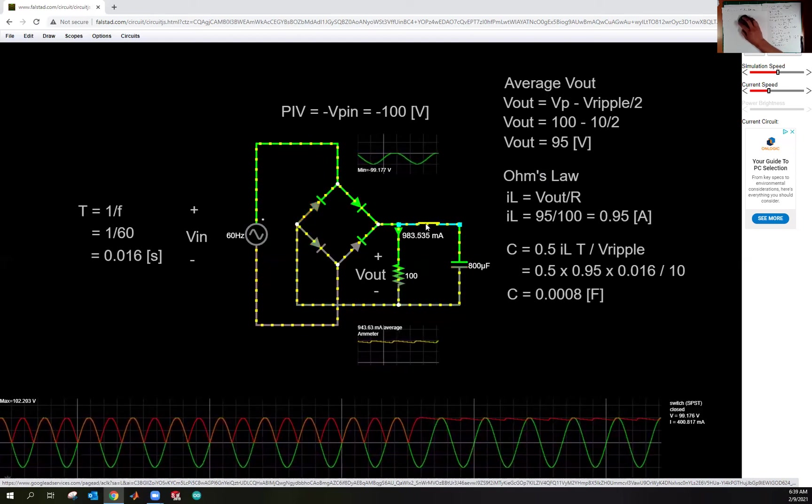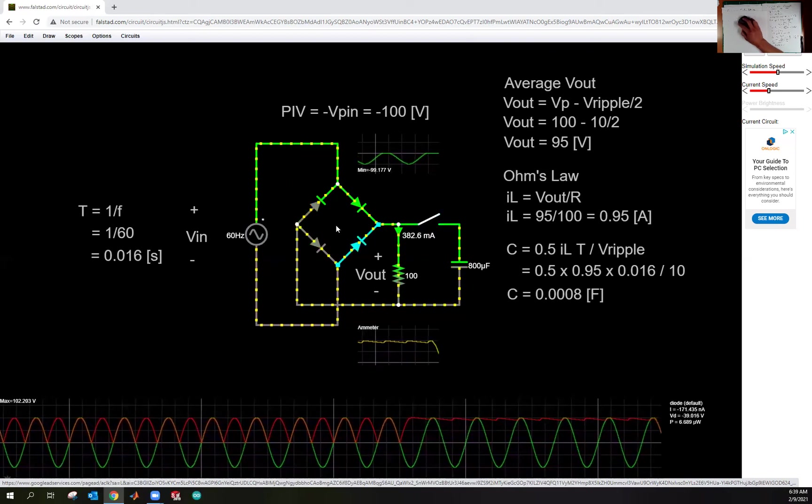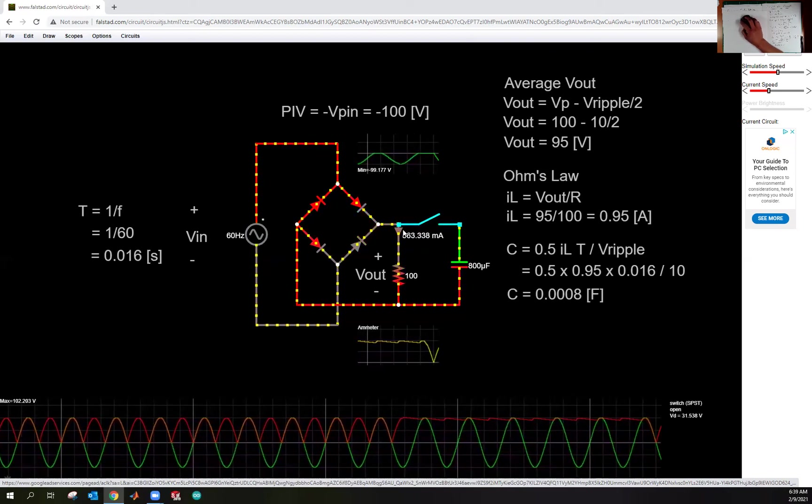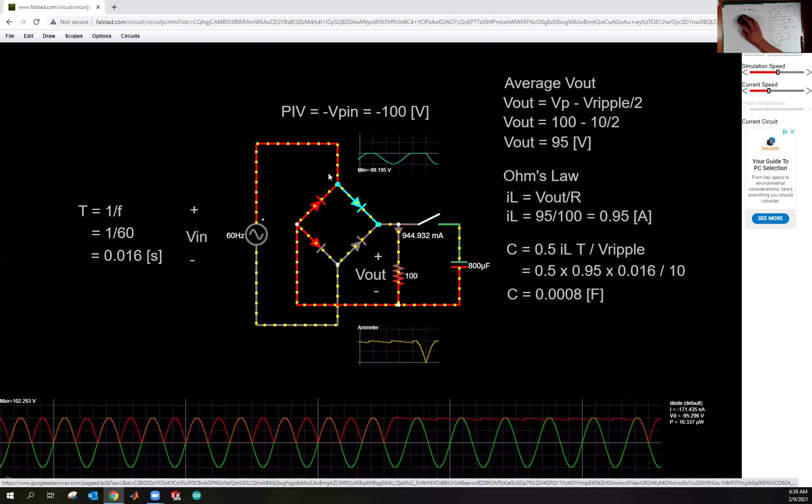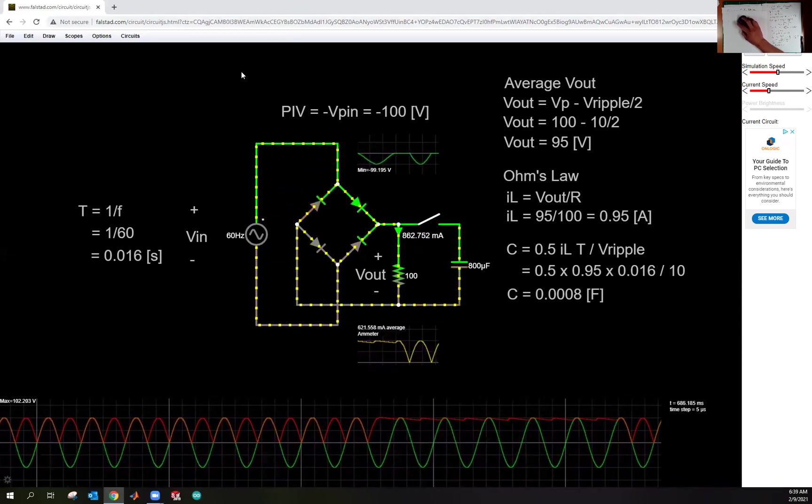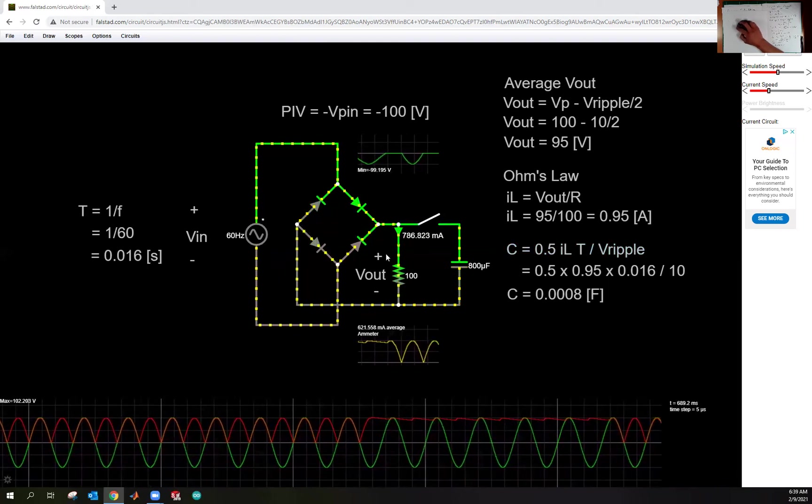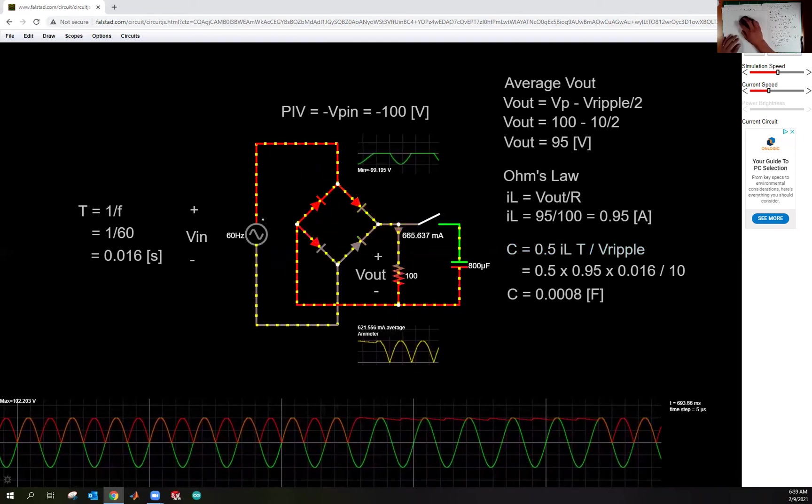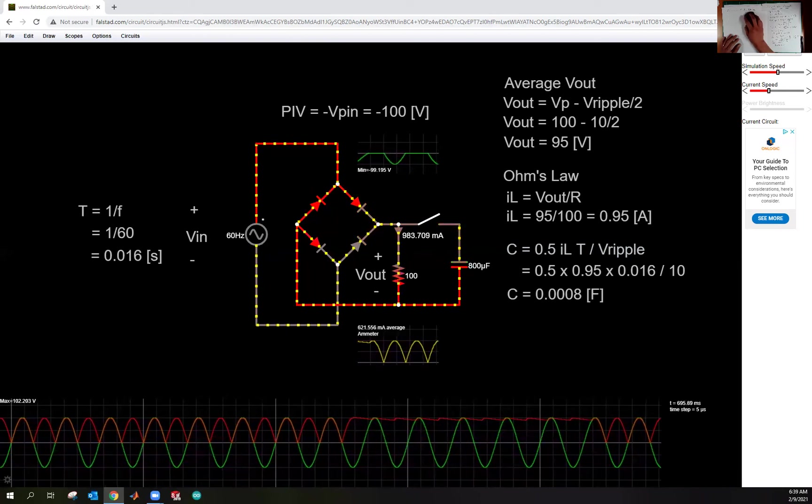And I can click back off, and so you can see what happens when you don't have a smoothing capacitor. Again, the link to this guide will be in the description, so you can always click it and then check it out and play with all the values yourself. I hope you learned a lot, and I'll see you in the next lecture.